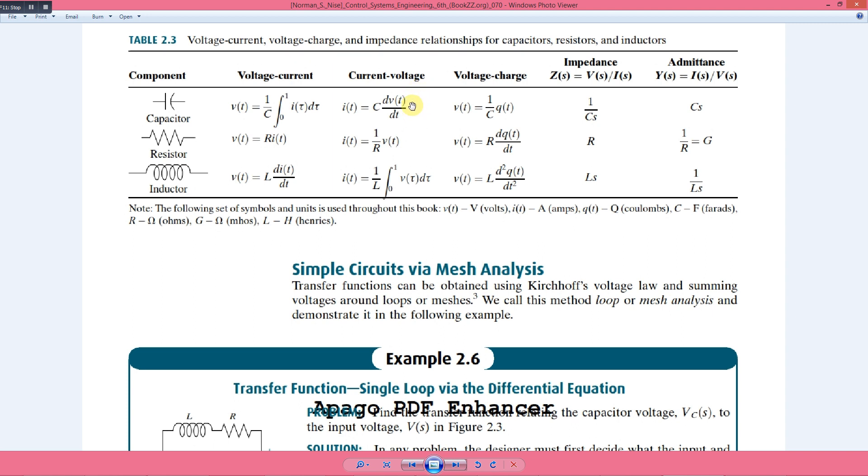If the voltage is constant, like a DC current, then the capacitor will not conduct and current will be equal to zero. Also we have the famous formula q is equal to Cv.